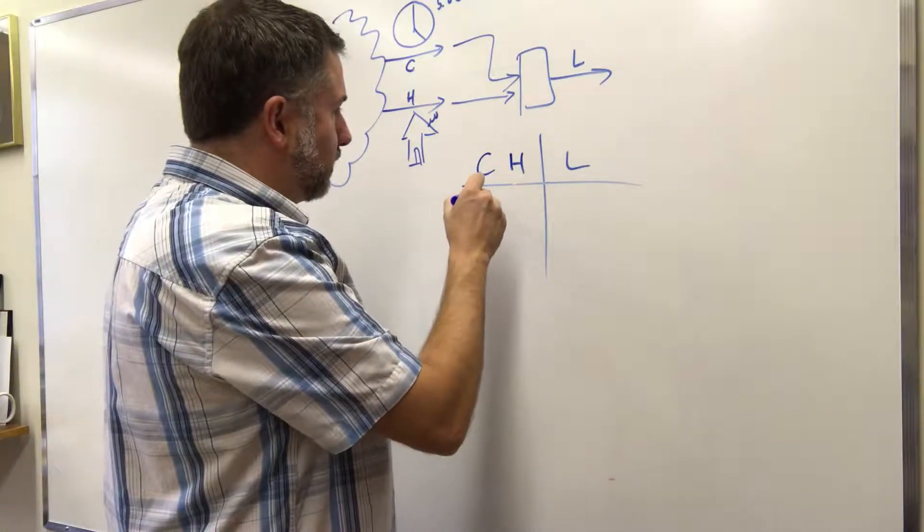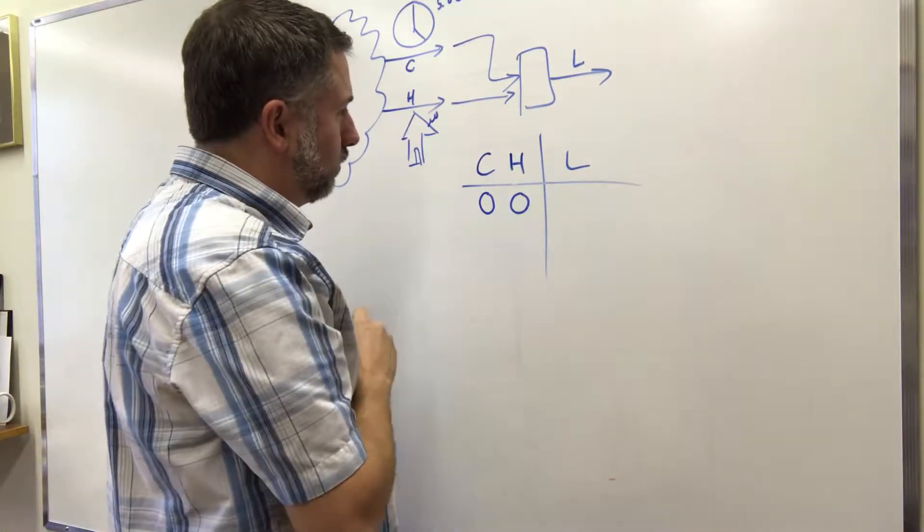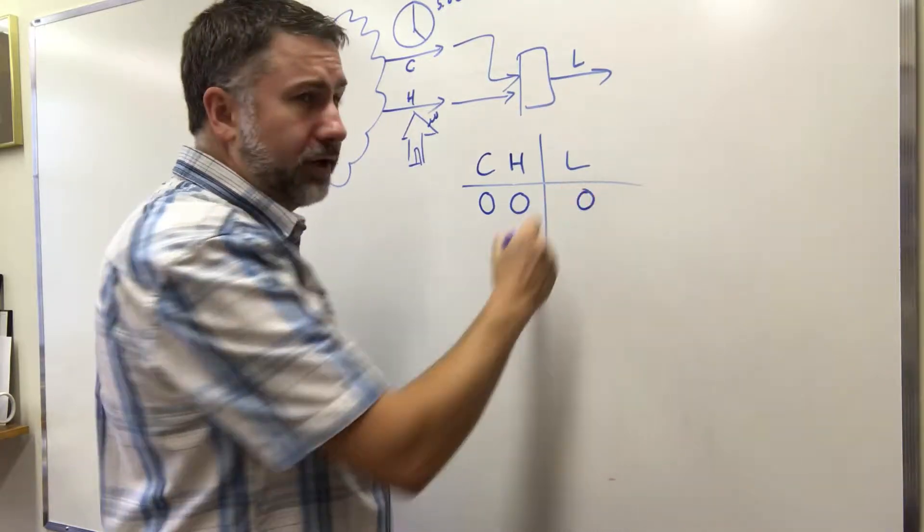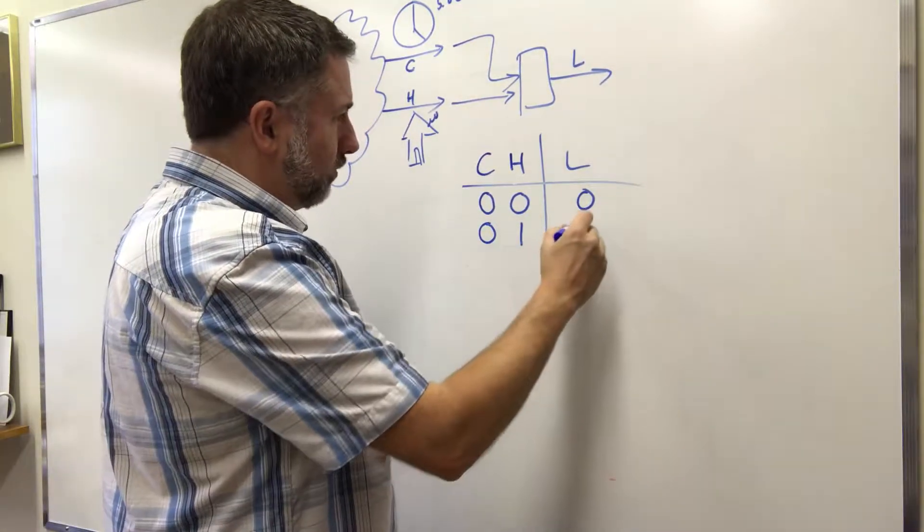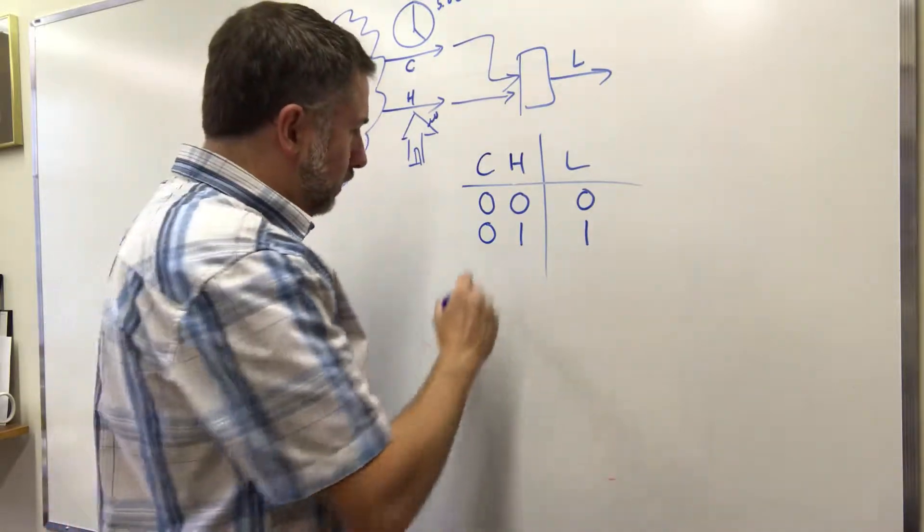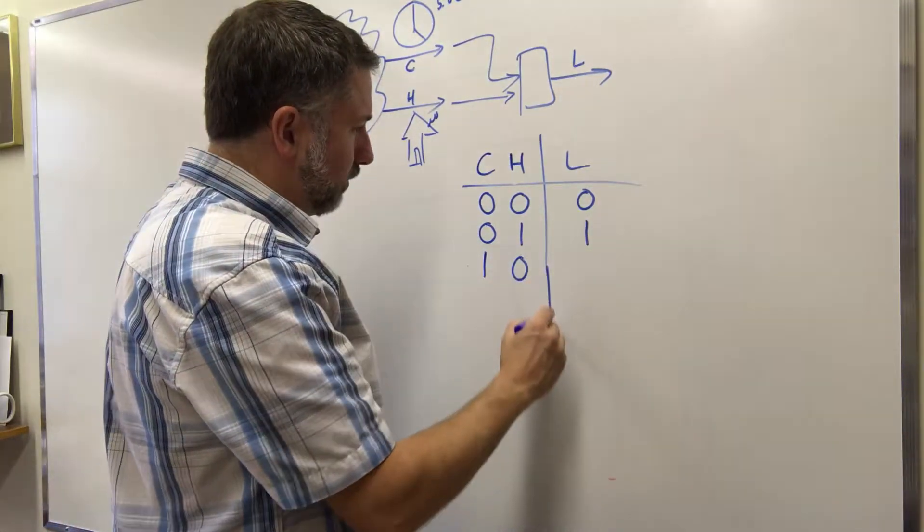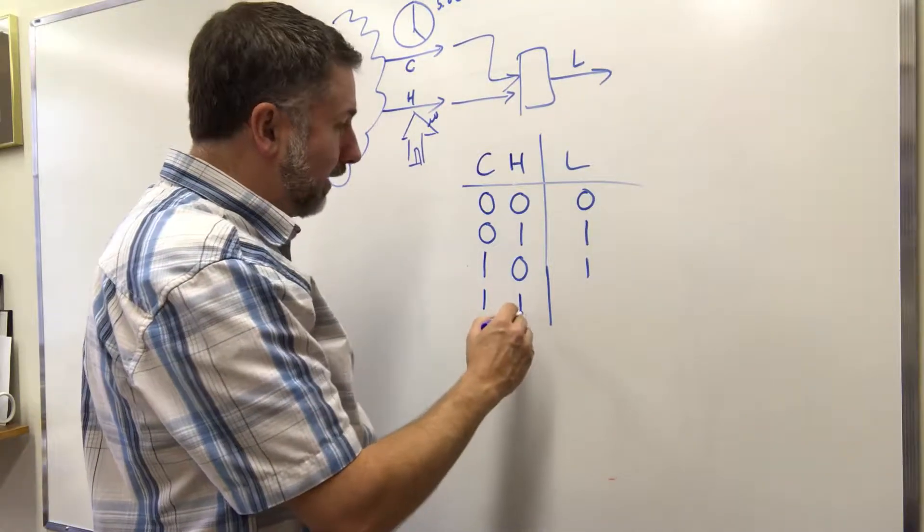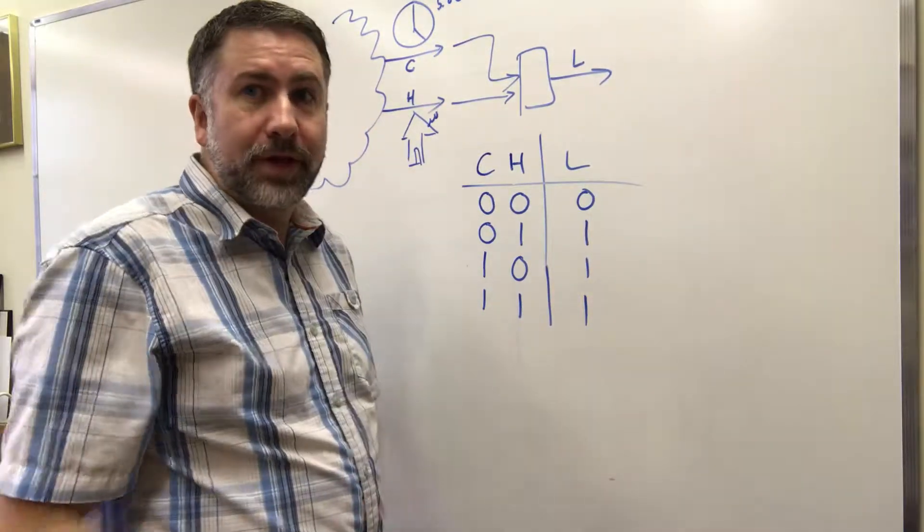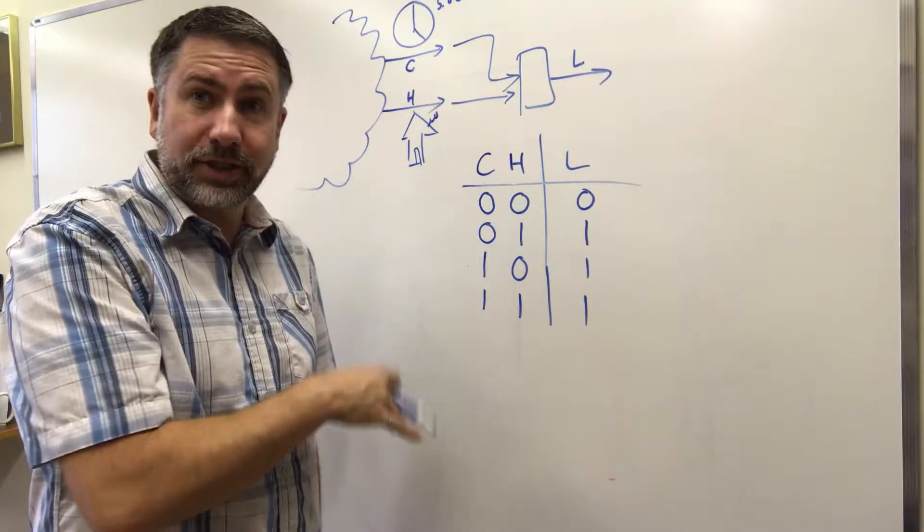Well, if the clock is not at 5 o'clock and I haven't arrived at home, well then the light's not on, obviously. If the clock's not at 5 o'clock but I have arrived home, the light should turn on. If the clock's at 5 o'clock but I haven't arrived home, it should turn on. And if the clock says 5 o'clock and I have arrived home, it should be on. These are the four possibilities for this state.